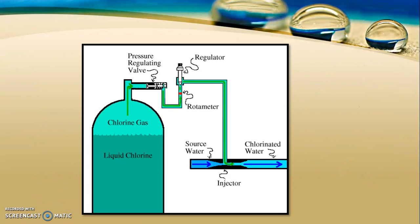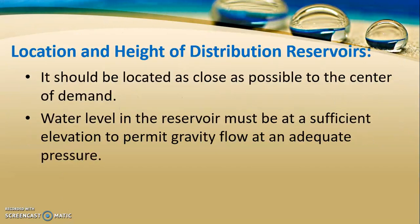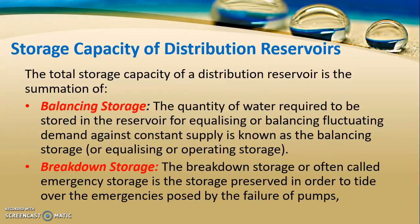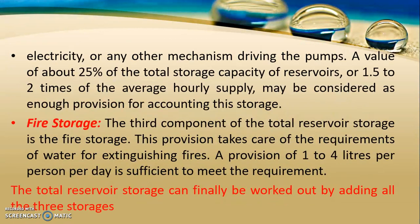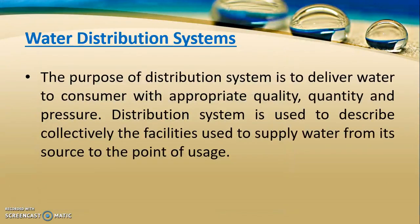After disinfection, water is passed to distribution reservoirs used for storing the water. These reservoirs should be located near the center of demand and at sufficient elevation to permit gravity flow at adequate pressure. The storage capacity should be able to balance fluctuating demand against constant supply and provide water in case of pump failure or fire outbreaks. After storage, water is passed to the distribution system from where it reaches homes.